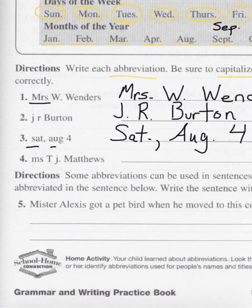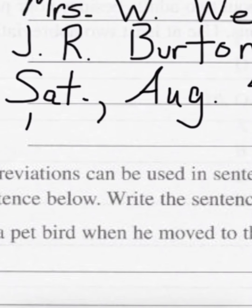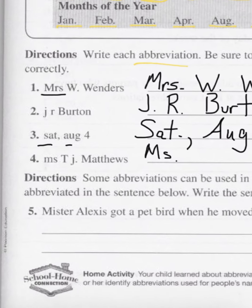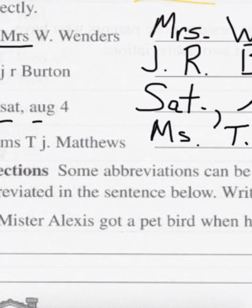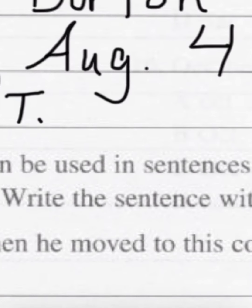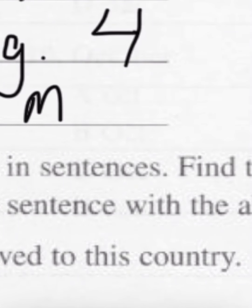Number four: Ms. T.J. Matthews — I spy four mistakes. First mistake: Ms. should be a capital M. Second mistake: there is no period after the S. Third mistake: T should have a period. And the last mistake: the J was not capitalized — it needs to be a capital J. And then we write out Matthews.